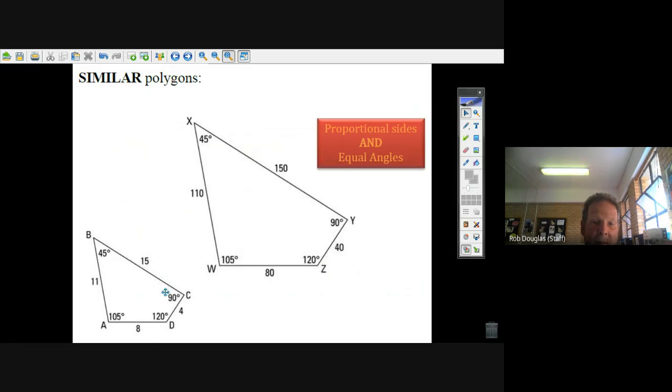z and d are 120, and a and w are 105, so their angles are equal. But their sides are proportional—that means if we take this side here between the two angles that are the same and we make a fraction.